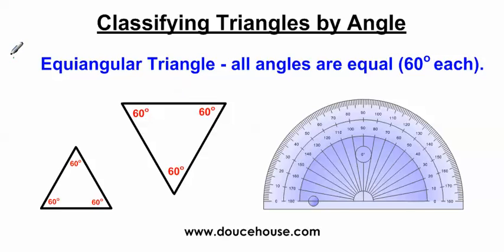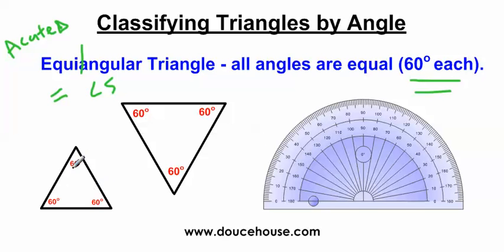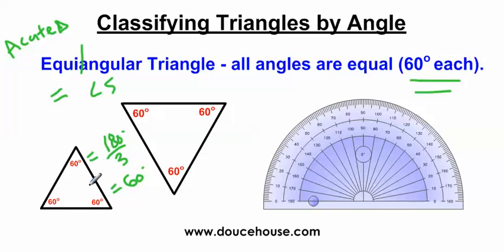Moving on, we have the equiangular triangle. This is the special kind of acute triangle — so this is still an acute triangle. If you look, it says equiangular triangle, meaning all angles are equal. If we chop this word in half: 'equi' is like equal, 'angular' is like angles — so equal angles. Each angle is 60 degrees. The sum of the interior angles of every triangle is 180 degrees, and every triangle has three angles. So 180 divided by 3 gives us 60 degrees each. No matter how big or small the equiangular triangle is, the angles are always going to equal 60 degrees.